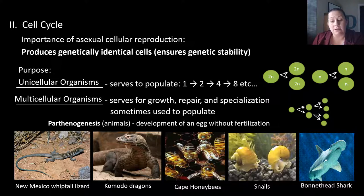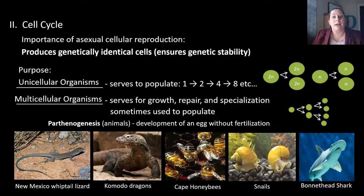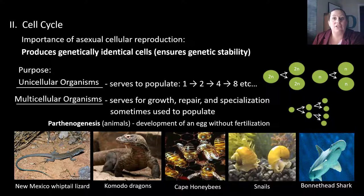Cape honeybees, some snails, and bottlenose sharks also do this. Of course, if a male is present, sexual reproduction can occur, which helps the species and causes some genetic variability. However, if there's no male around, they can reproduce and keep their generational line going. The problem is it keeps things stable but does not allow for genetic variation, and that genetic variation is important for survival.